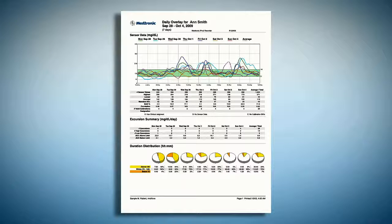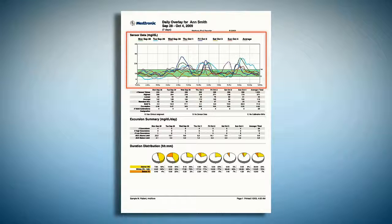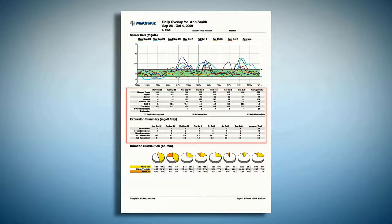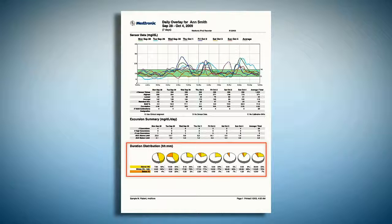The report is opened in PDF format for quick upload to electronic medical record systems. The Daily Overlay report provides an overlay of the sensor tracings from each day of the evaluation, making it easier to see patterns occurring around the same time each day. This report also provides daily statistical information, including an excursion summary of highs and lows, and pie charts of the duration distribution — showing what percent of each day the patient spent above, below, and within the target range.